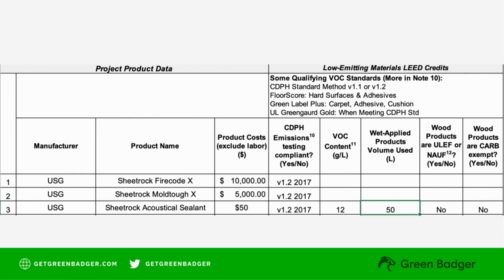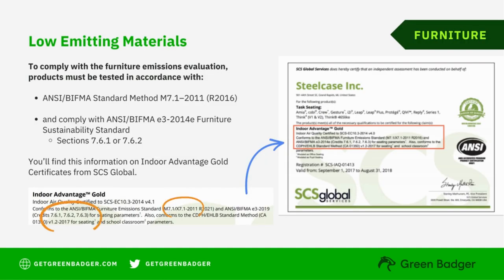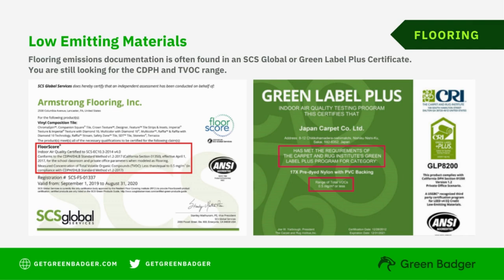We also need to show the volume — how much sealant do you intend to use on the project? Other examples of low-emitting certificates include Indoor Advantage Gold certificates, SCS Global FloorScore, and Green Label Plus, which is very commonly used to certify carpets and carpet adhesives. These certificates also show that the product meets the CDPH testing standard and show the TVOC range.